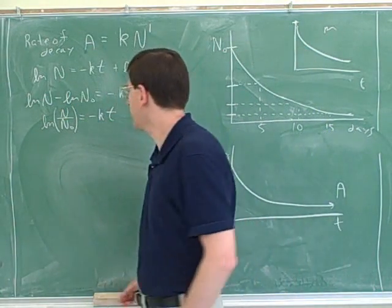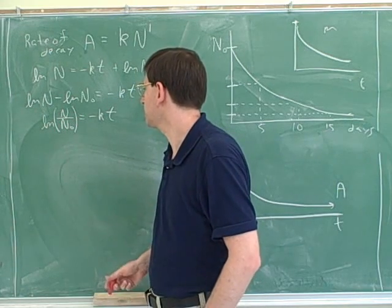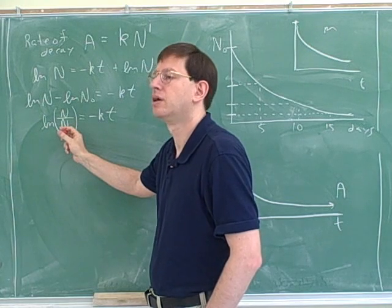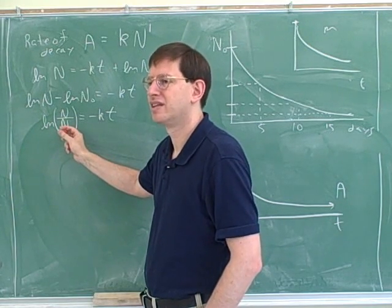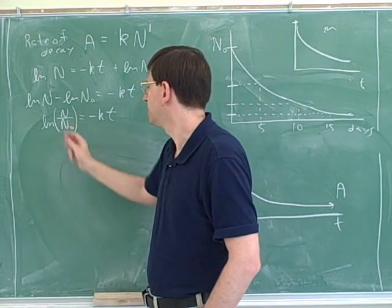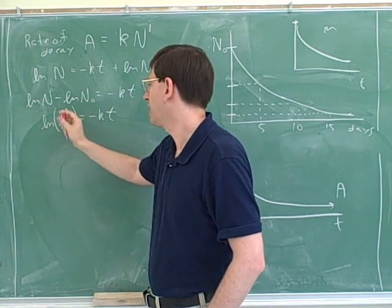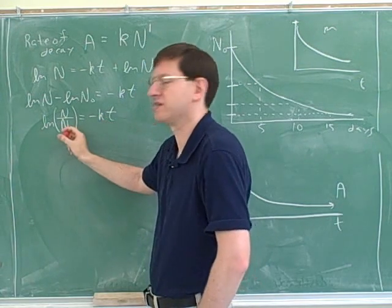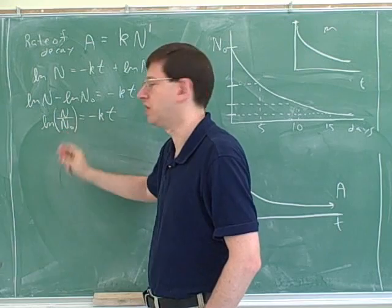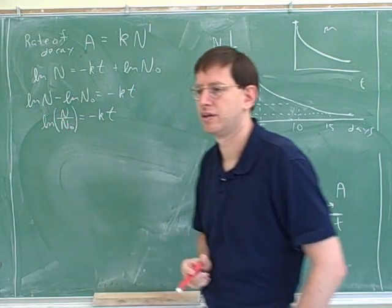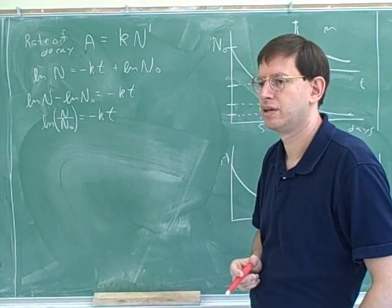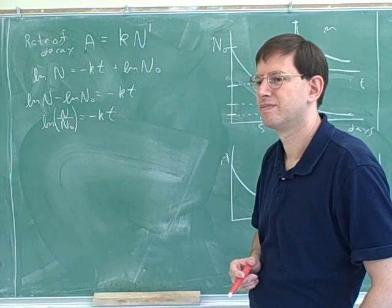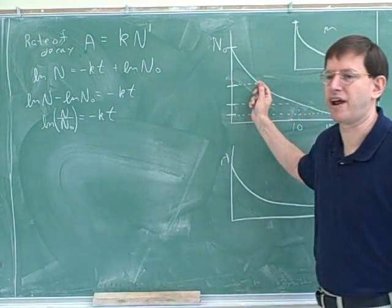So what does N₀ stand for? It's the number we started with — how many nuclei we originally started with. And t stands for the amount of time that's passed since the start, so N₀ stands for time zero. And what does N stand for? It's the same N we have in this graph — the number of nuclei that are left.